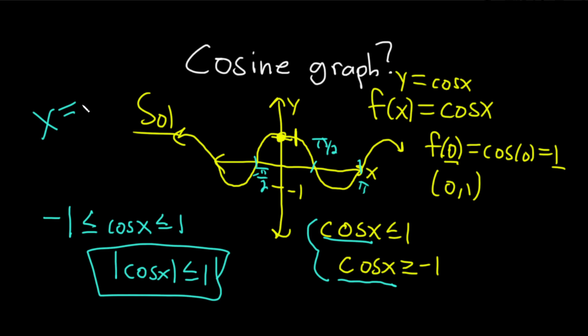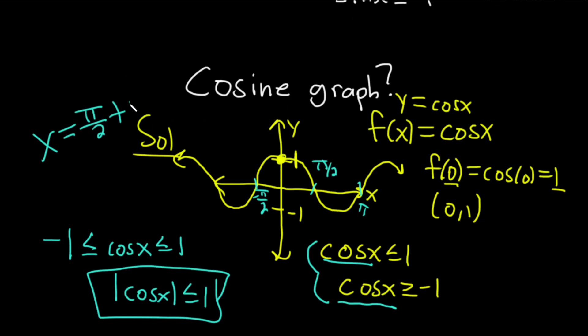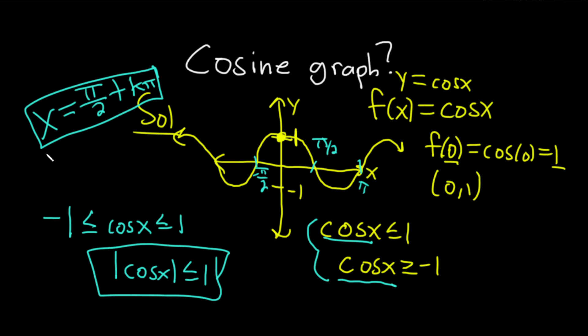So these would be all the zeros of the cosine function or all the x-intercepts would be π/2 plus kπ. That would be it right there. π/2 plus kπ. And where k here is an integer. So k is an integer.